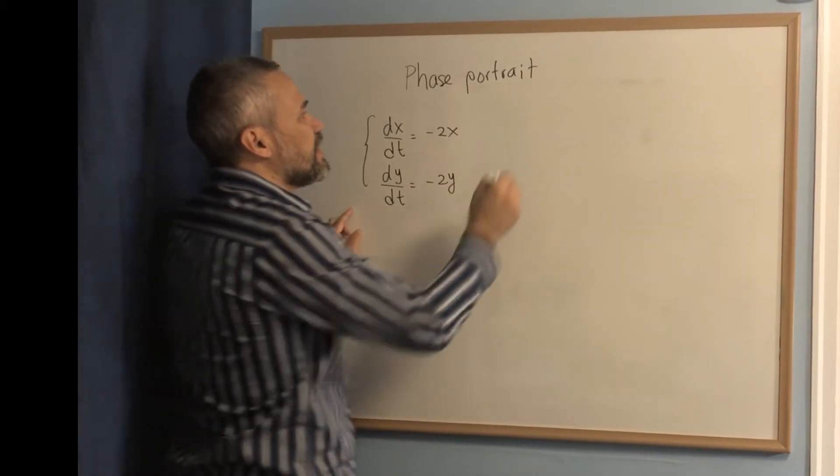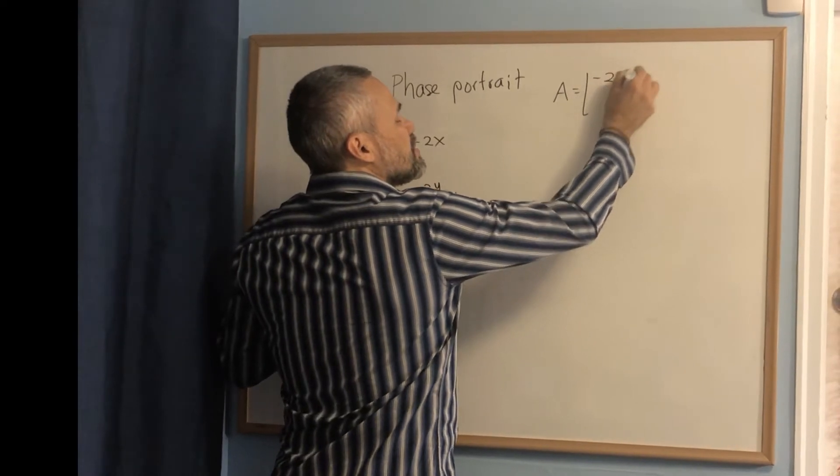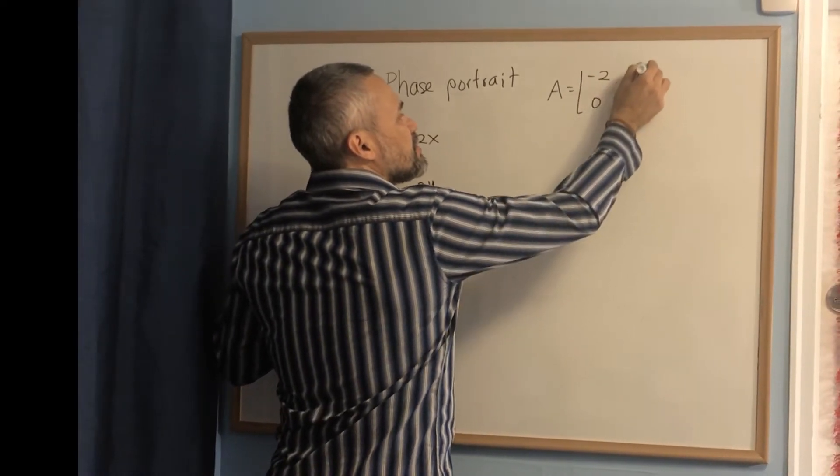Then, in this case, the matrix of the system is negative 2, 0, 0, negative 2.